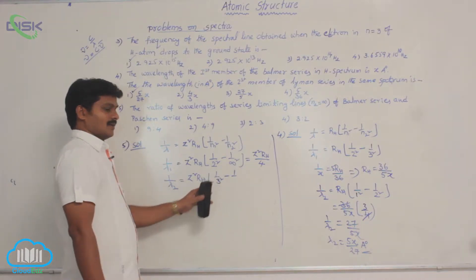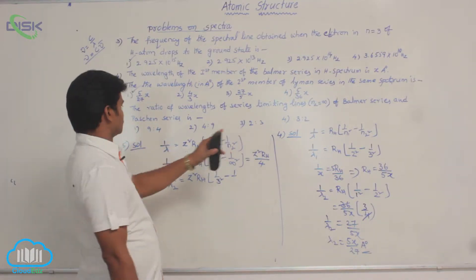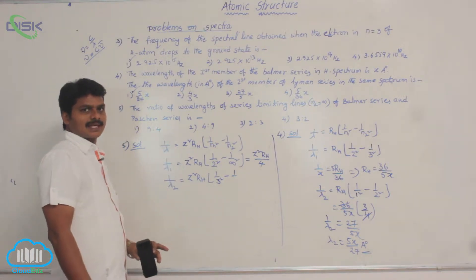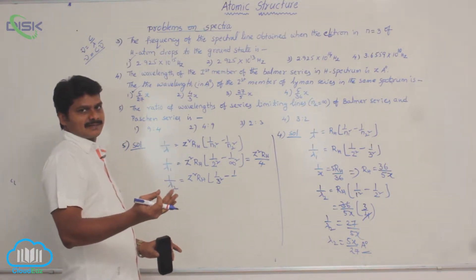So here, limiting line in Paschen series. Paschen means third series: Lyman, Balmer, Paschen, Brackett, Pfund.